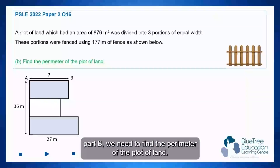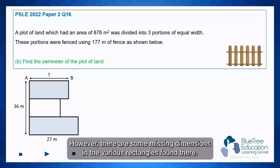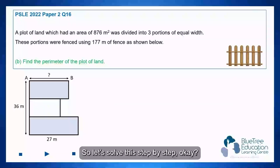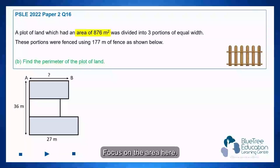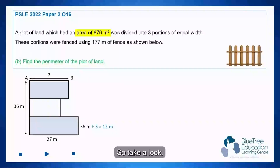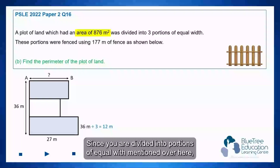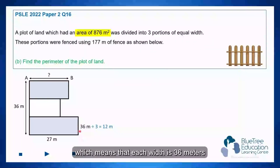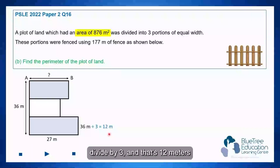For Part B, we need to find the perimeter of the plot of land. However, there are some missing dimensions in the various rectangles. So let's solve this step by step. Focus on the area: 876 square meters as given. Since they are divided into portions of equal width, each width is 36 meters divided by 3, which is 12 meters.